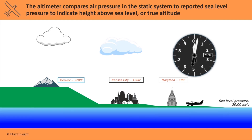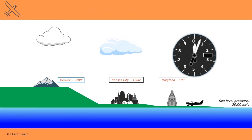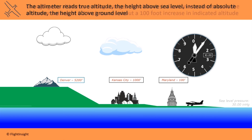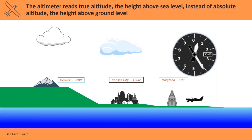Here in Maryland, the field elevation is around 100 feet. Changing the altimeter setting from its original 29.92 to the reported pressure of 30.00 causes an increase in the altitude indicated. An increase of 0.1 inches of mercury causes about a 100-foot increase in indicated altitude.